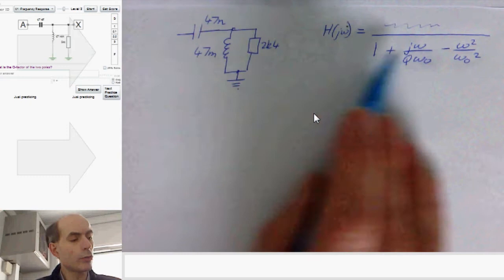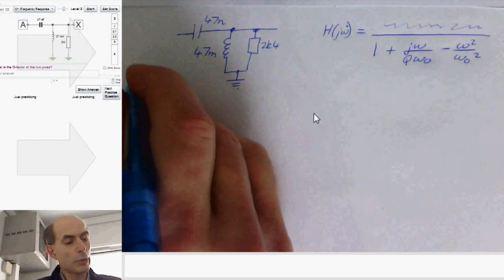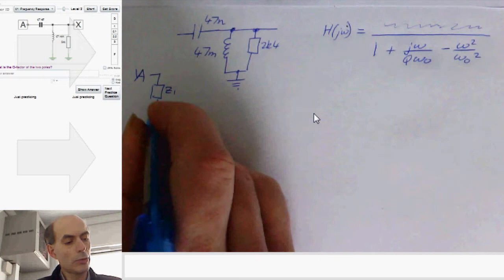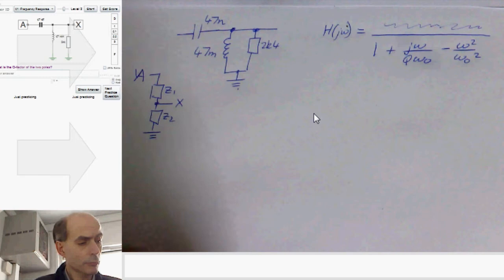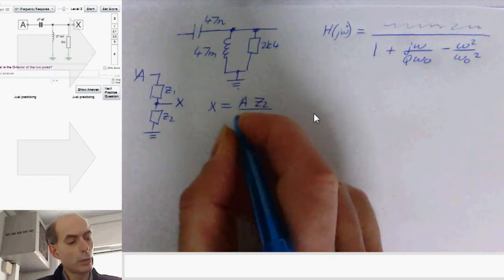Right. This is a potential divider. Just about all of these things are potential dividers. Here, our potential divider, we have A on the input here, z1, z2 and ground. And this is the output, x, just like any other potential divider. And just like all potential dividers, the formula here is that x is A times z2 over z1 plus z2.